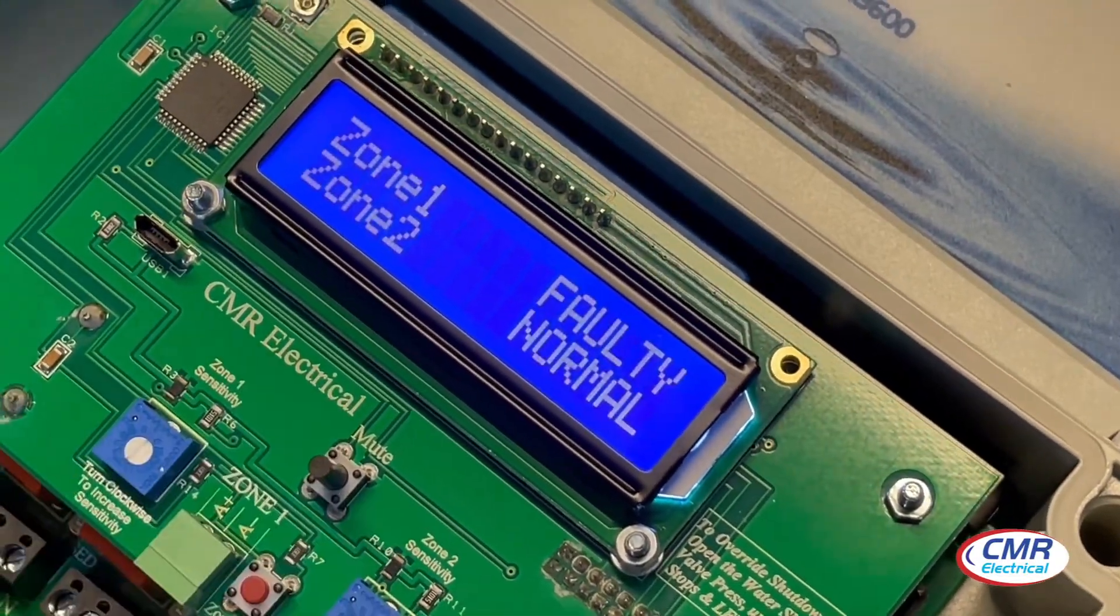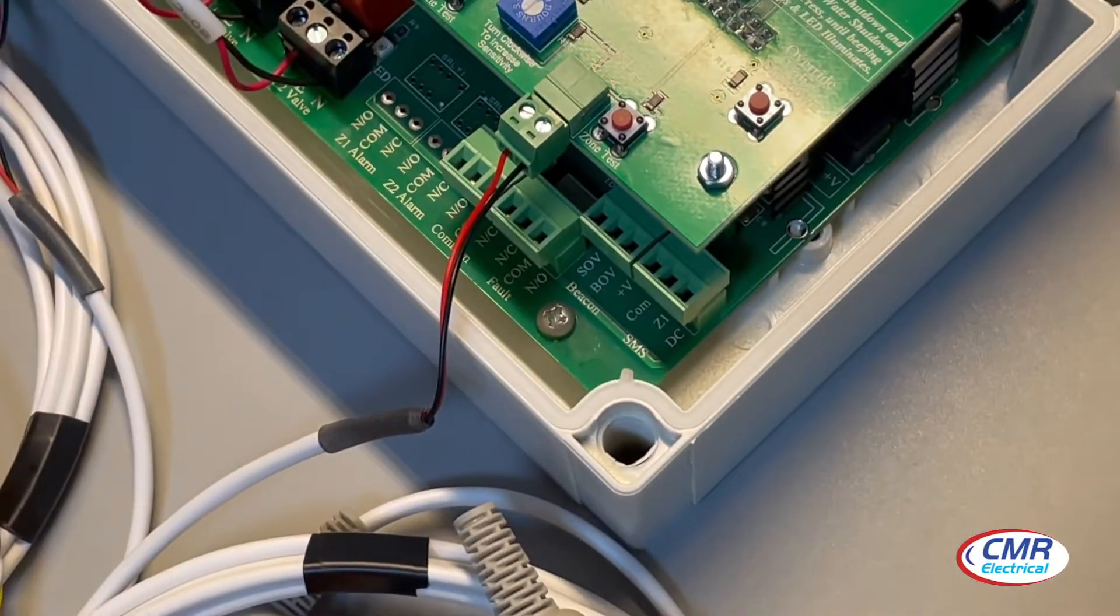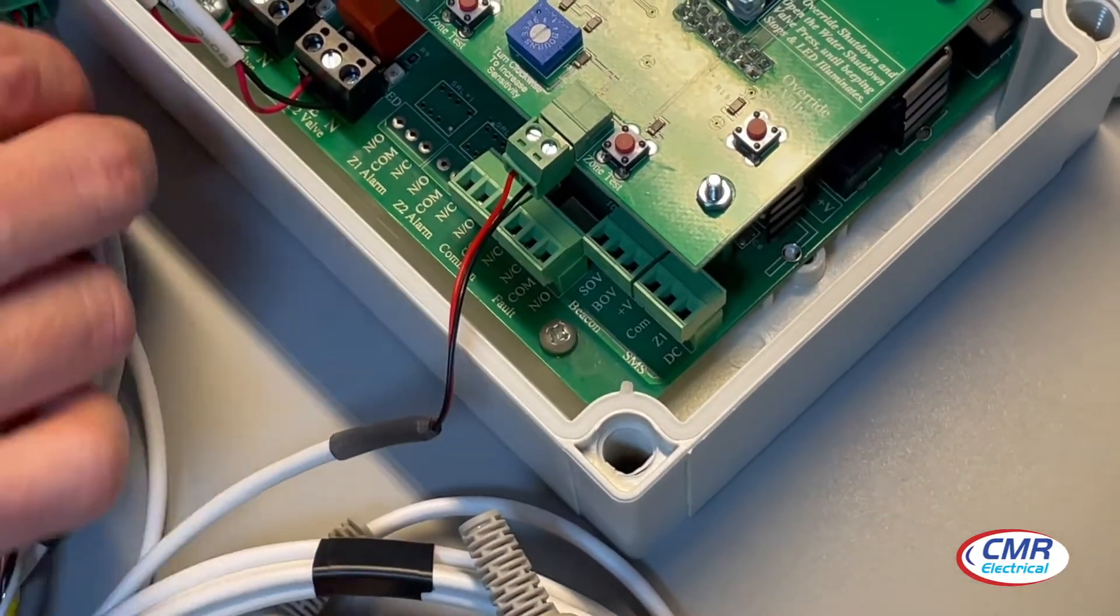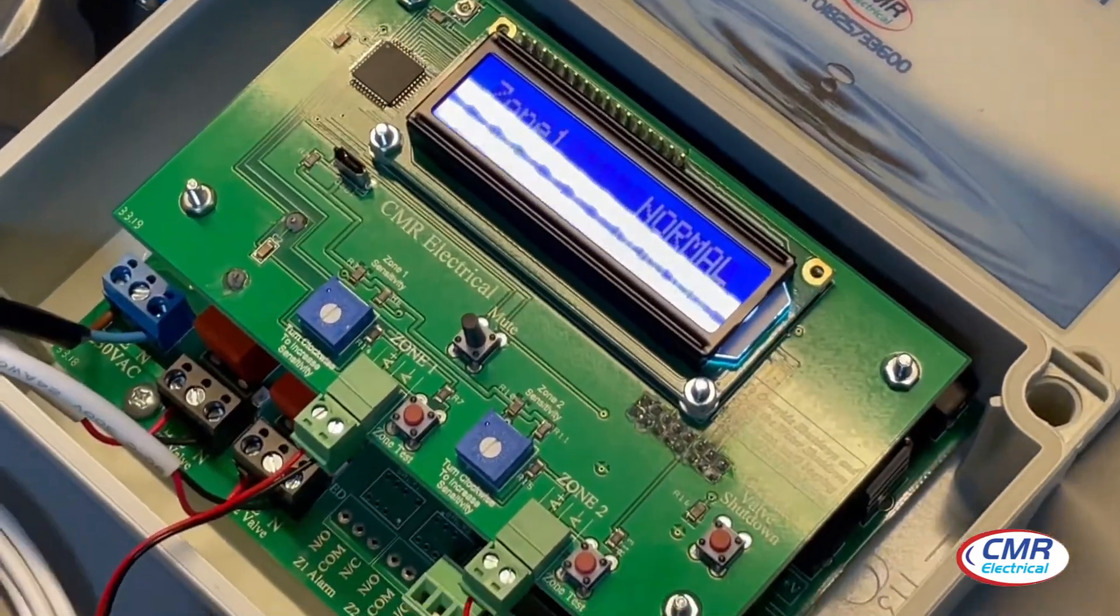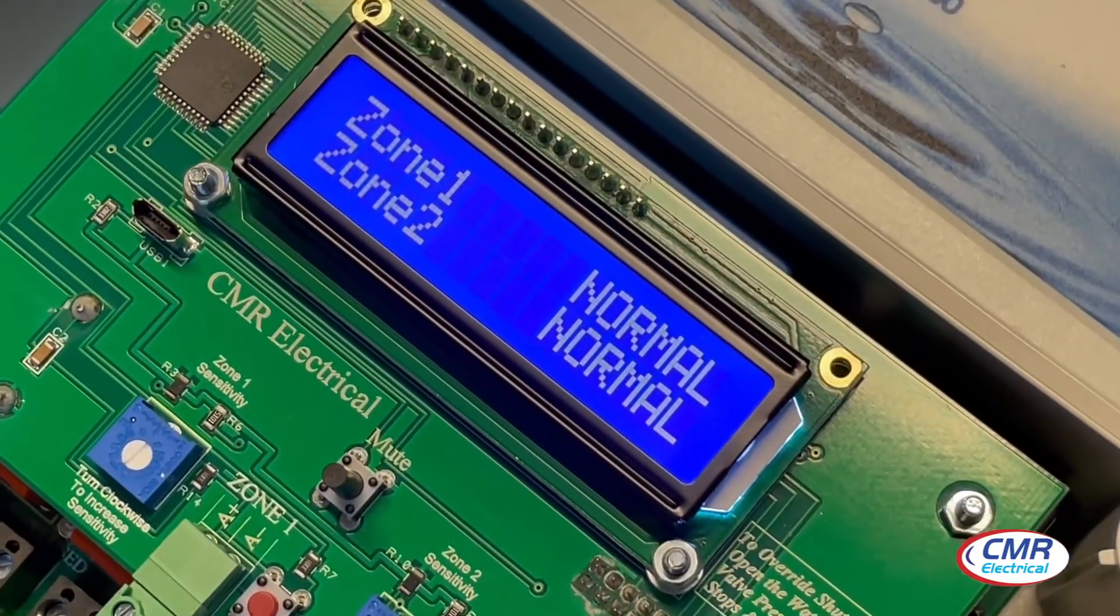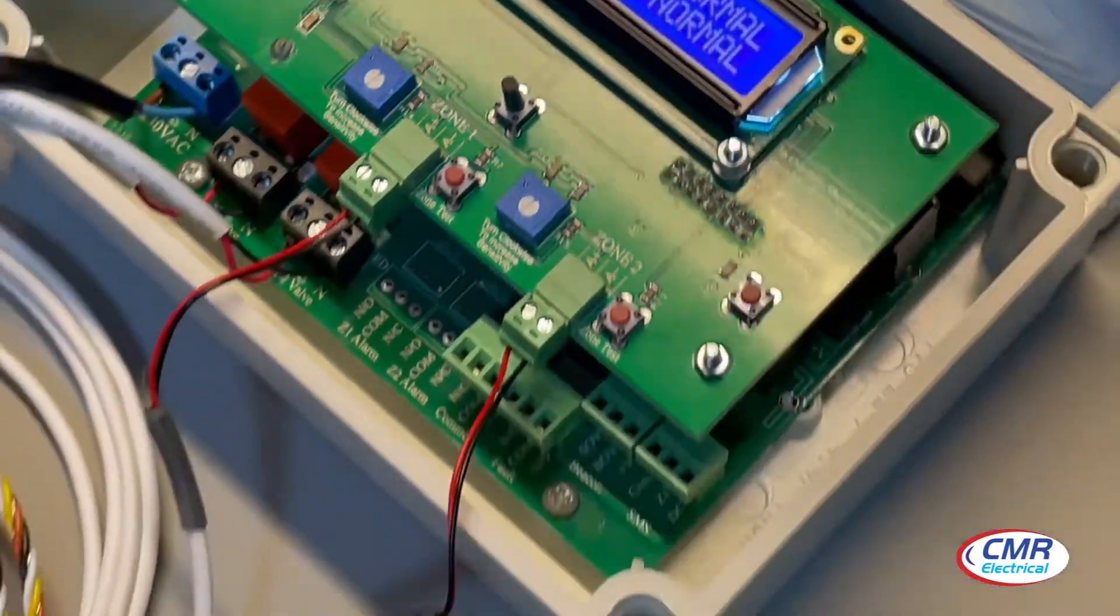The volt-free contact on that fault terminal will change. It will notify the BMS system that a fault has occurred with the cable. If the cable gets damaged, trodden on, or trampled, it will throw up a fault alarm.